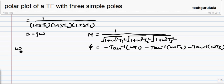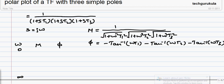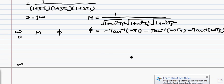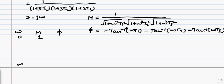We take ω as a variable and vary it from 0 to infinity, observing how magnitude M and phase φ change, then plot these values in a complex plane. When ω = 0, M = 1, since substituting 0 gives 1 over √1 · √1 · √1 = 1. The phase angle φ is also 0, since all tan⁻¹ terms become 0.